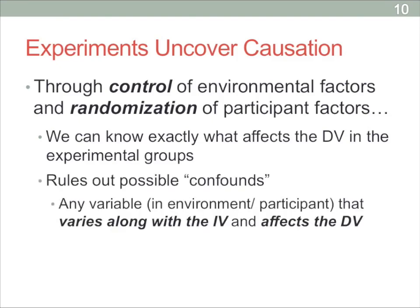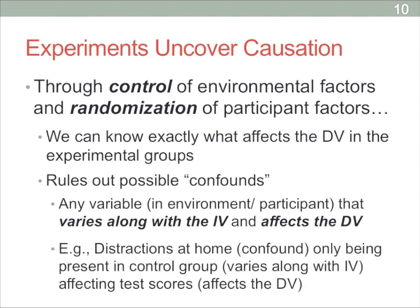This is the best way to rule out all confounds. A confound is any variable that you think might be affecting your dependent variable but also is varying between groups. For example, in the example we discussed, having only one group work at home created distractions as a confound — it's present only in the control group, so it varies along with the IV, and it's likely to affect test scores. If any factor affects the DV but is spread equally across conditions, that's not a confound — it cancels itself out. If both groups did the task at home, then distractions would be balanced, and it would be the independent variable causing the differences.